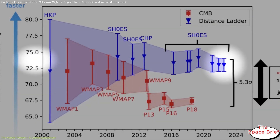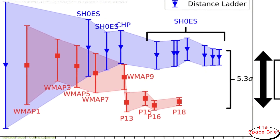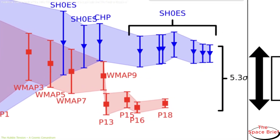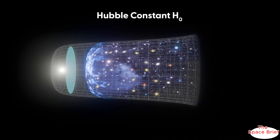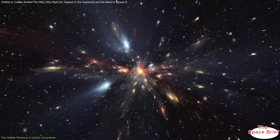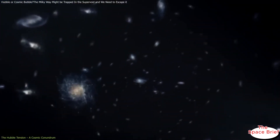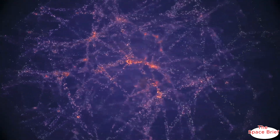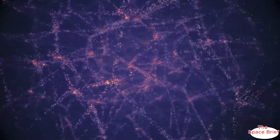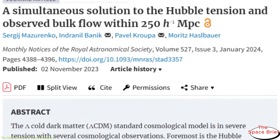These objects allow scientists to measure distances and redshifts, showing how much their light stretches as galaxies move away. This approach consistently produces a higher value — approximately 73.2 kilometers per second per megaparsec. This discrepancy of about eight percent might seem small, but it challenges the Lambda-CDM model and suggests our understanding of the universe's evolution may be incomplete.